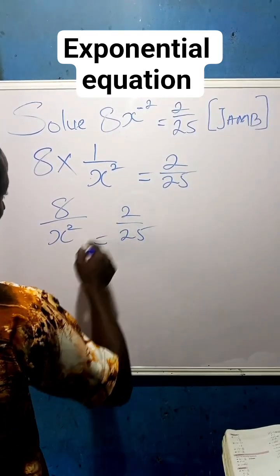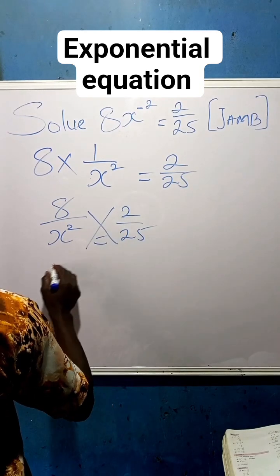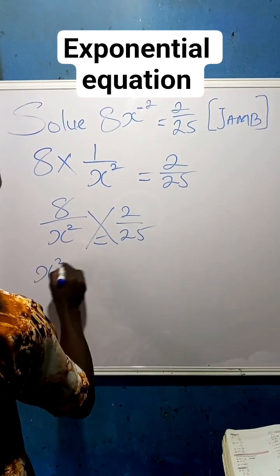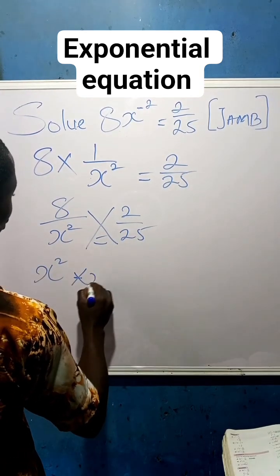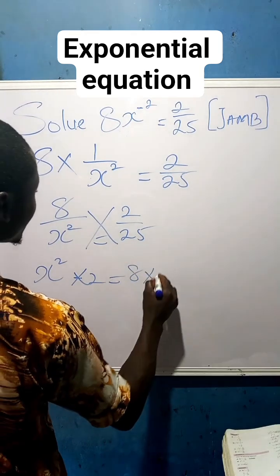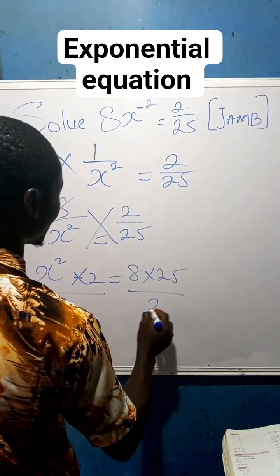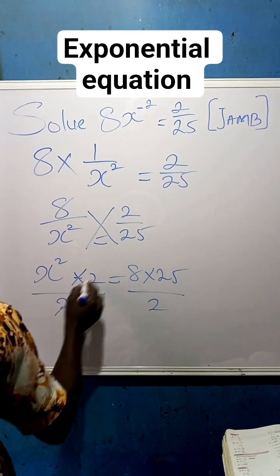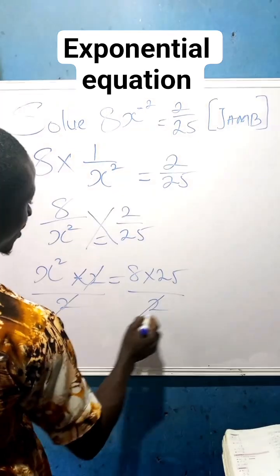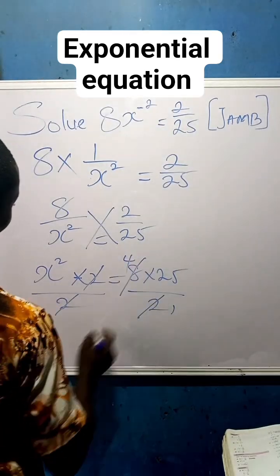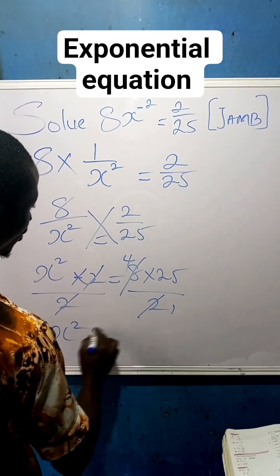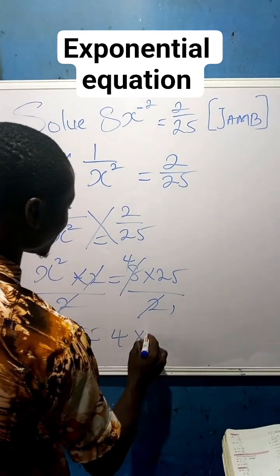Here we can cross-multiply, so that we have x squared times 2 equals to 8 times 25. We can divide both sides by 2, so that we have 2 to cancel 2, then 2 here 1, 2 in 8 is 4. We can now have x squared equals to 4 times 25.